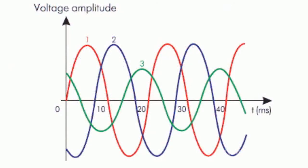An unbalanced three-phase load or single-phase load connected to a balanced three-phase network can unbalance the voltage. The voltage becomes unbalanced due to unbalanced currents running through the main. Voltage unbalance may be analyzed by means of a symmetrical direct negative phase shift by using the homopolar components method.